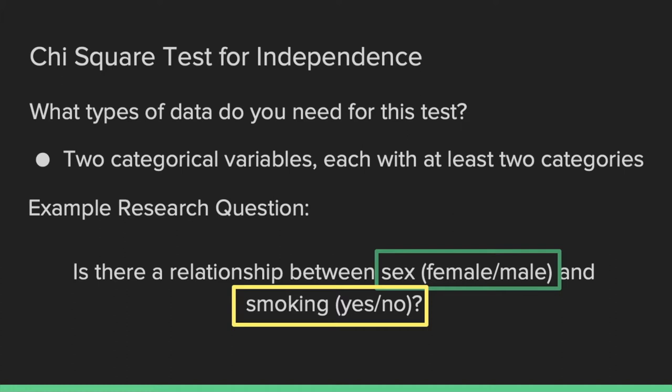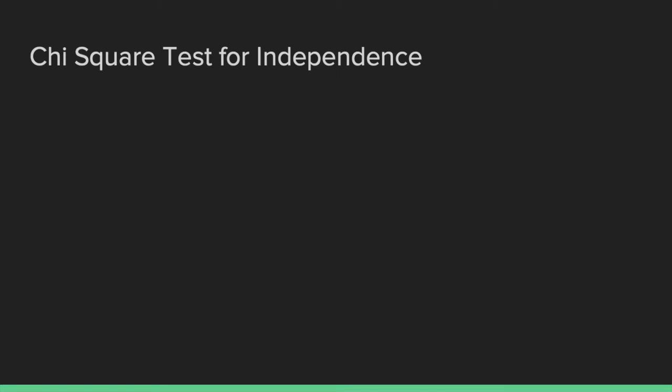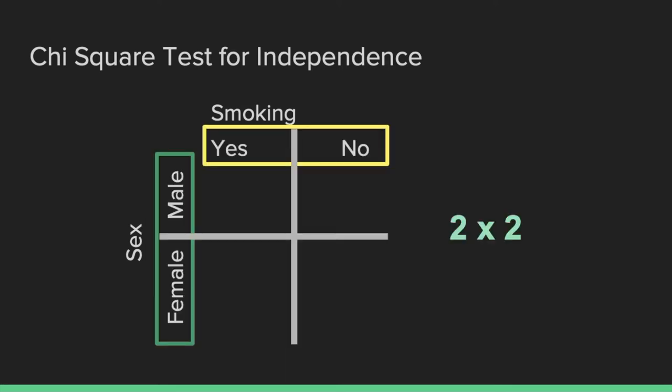It's important to know that you do not have to have a two-by-two setup for a chi-square test. You must have two categorical variables, but each of them can have more than two categories. So you could have a two-by-three setup, a three-by-three setup, or any other variation.